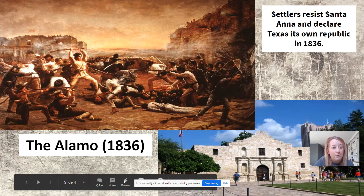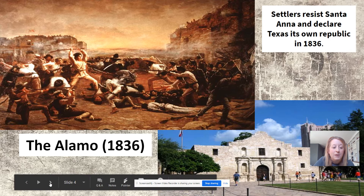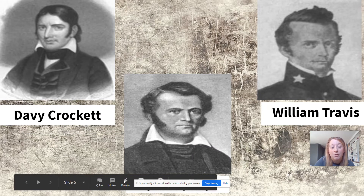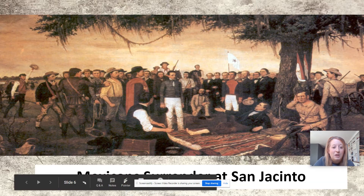The Alamo was surrounded by the Mexican army. All of the men inside, as well as many prisoners later, were executed. And this became kind of a rallying cry for the rest of the Americans in Texas to remember the Alamo and avenge the deaths of some very brave soldiers like Davy Crockett, Jim Bowie — who has a knife named after him — and William Travis.